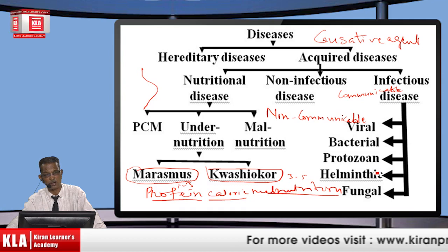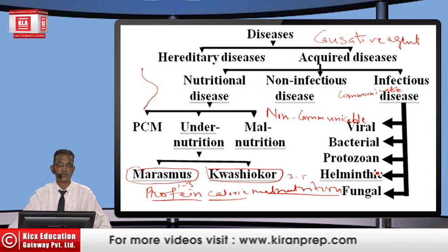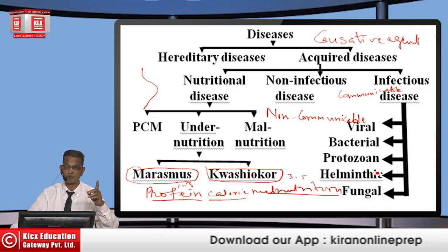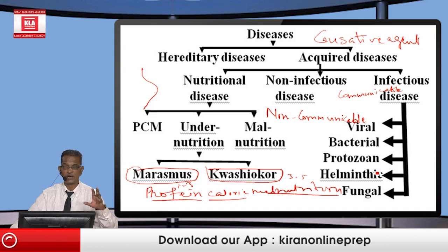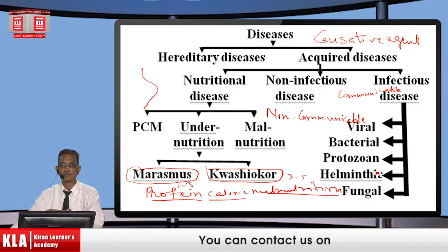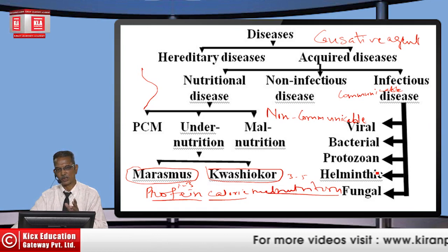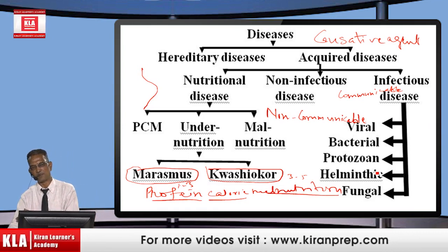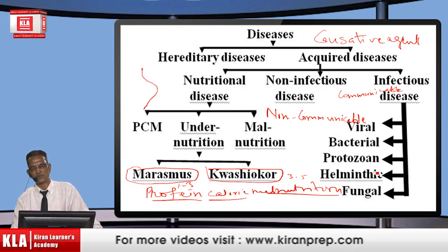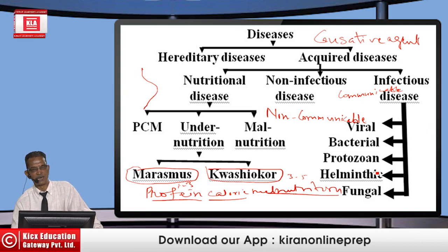Among protozoan diseases, the most common is malaria, caused by Plasmodium, transmitted when a female Anopheles bites. Only the female Anopheles — not the male — visits a person's body to suck blood; the male feeds on nectar from flowers. There is also a time gap of 13 to 14 days for the female Anopheles to digest the blood before sucking again.